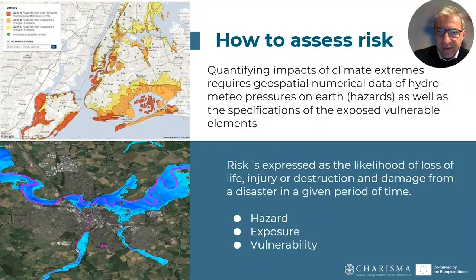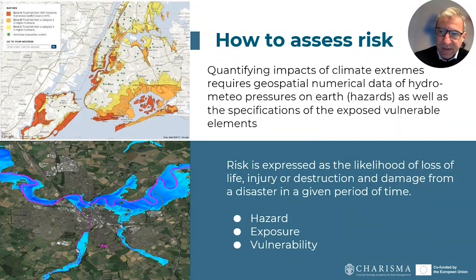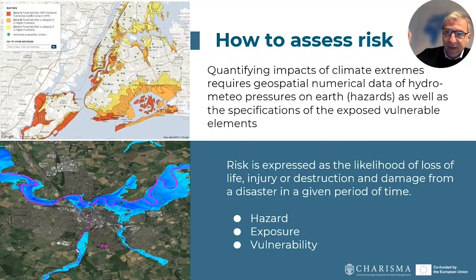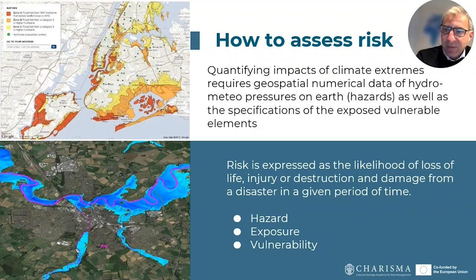How do we assess risk? How do we quantify the impacts of climate-related extremes? We need quantitative information. This major principle is related to the fact that we are requested to understand and analyze the biophysical specifications of the disasters. If there is intense precipitation, rivers will see water levels increase and flooding may occur. This is the biophysical component that requires geospatial data of land systems, water systems, and the dynamics of precipitation, runoff, and flooding.